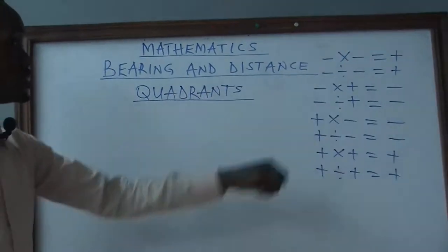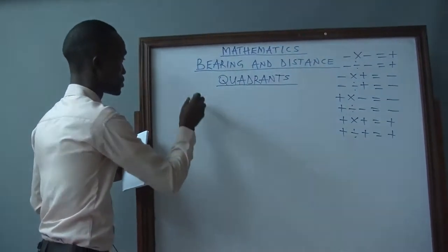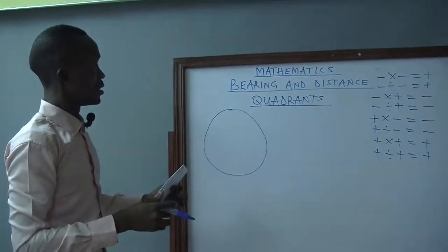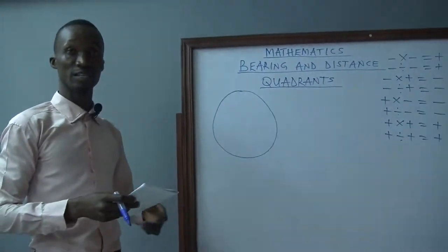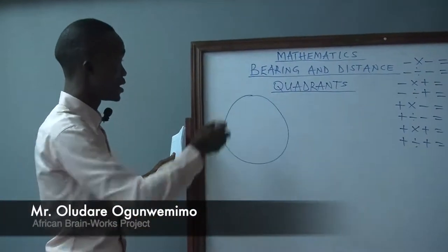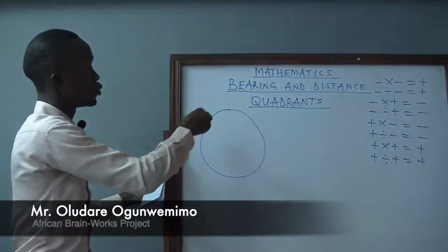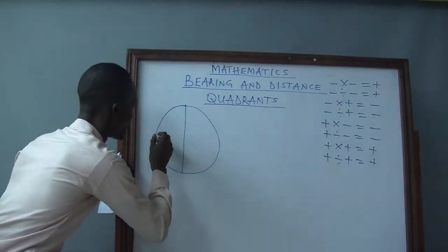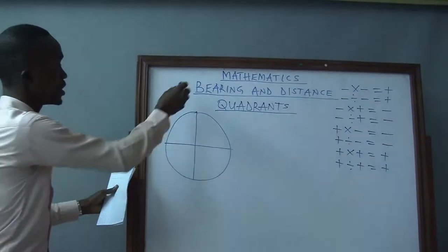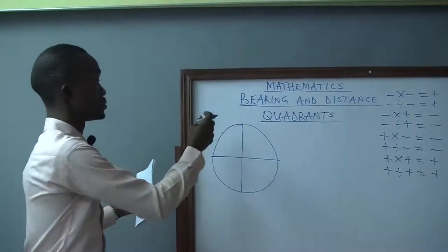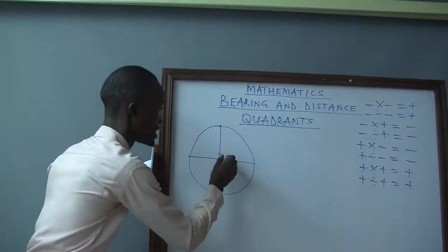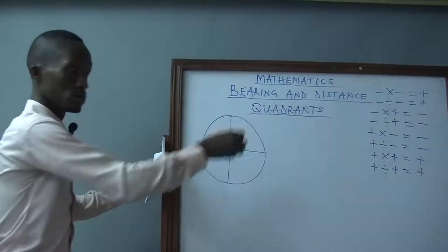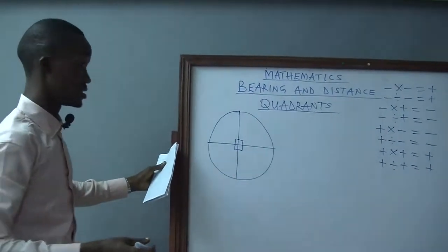In this quadrant work, I'll be making reference to these sign rules. When we talk about quadrants, we talk about a circle. The angle in a circle is 360 degrees. We divide this circle into four equal parts, so each segment is 90 degrees — this is 90, this is 90, this is 90, and this last one is 90 — and their sum gives us 360 degrees.